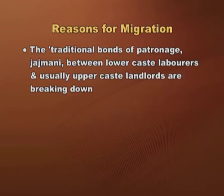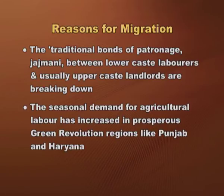In India, one can notice the emergence of a pattern of seasonal migration. Every year, thousands of workers circulate between their native villages and prosperous areas where there is greater demand for agricultural labour and higher wages are paid. There are two important reasons for this: first, the traditional bonds of patronage — that is, the jajmani system between lower caste labourers and upper caste landlords — is breaking down; and second, seasonal demand for agricultural labour has increased in prosperous green revolution regions like Punjab and Haryana.